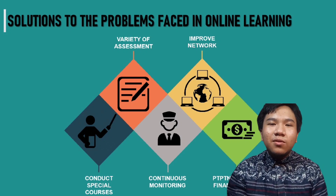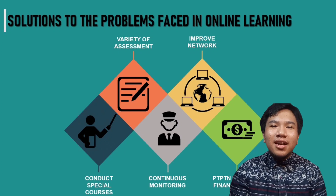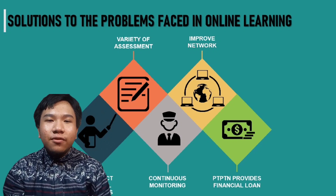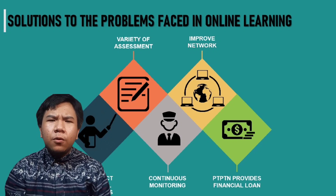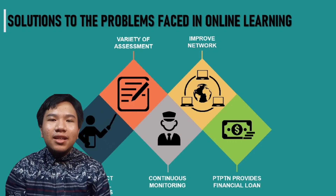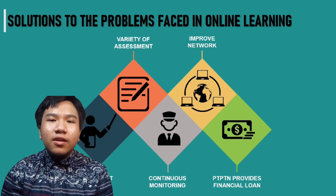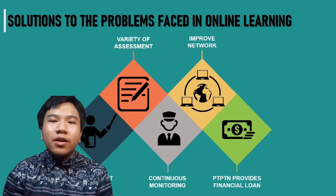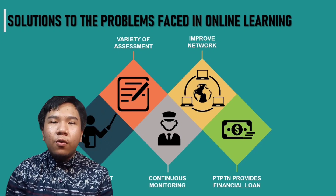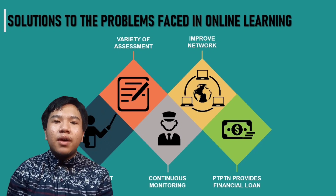We also found some solutions to deal with problems stemming from online learning. Special courses must be conducted to educate instructors who are not computer literate on how to teach online using new technologies and applications. Next, schools should offer a variety of internal assessments. Students with good internet connection can take assessments online, but for those with poor connectivity, teachers can send a PDF via WhatsApp or other applications, or print out the assessment for students to come to school to complete. Additionally, internet access in rural areas must be improved to ensure that home-based learning and teaching, or PDPR, can be conducted smoothly.